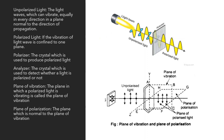First, what is unpolarized light? Light waves which can vibrate equally in every direction in a plane normal to the direction of propagation are called unpolarized light. In the actual case, there are vibrations in all directions in the plane perpendicular to the direction of propagation; we show these vibrations resolved into the y and z directions for understanding.